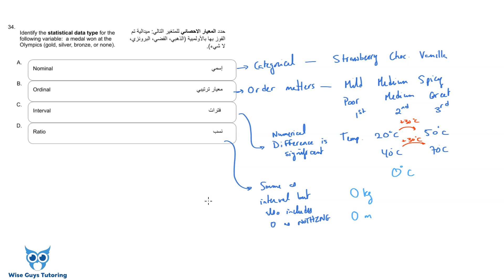For this question, the given answer is nominal. In my opinion, this should be ordinal, because everyone knows gold is better than silver, silver better than bronze, better than none — there's a clear order, like first, second, third. Either way, I hope you understand the definition of each type. Let me know what you think in the comments.